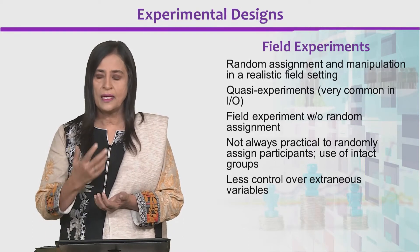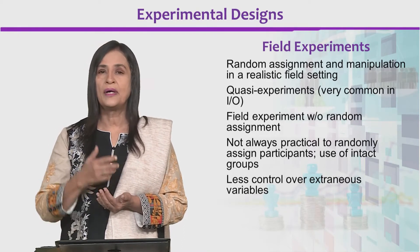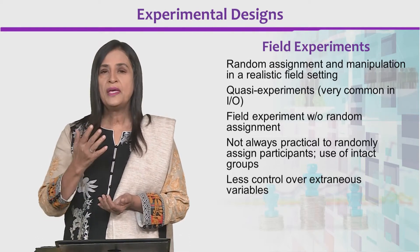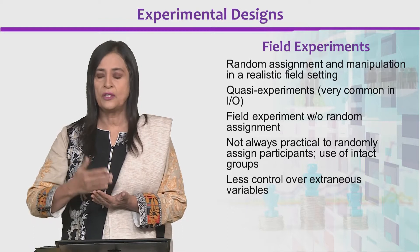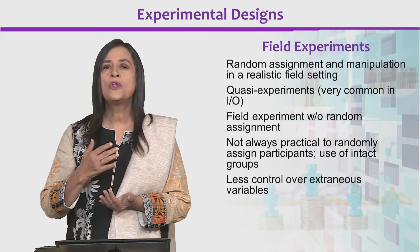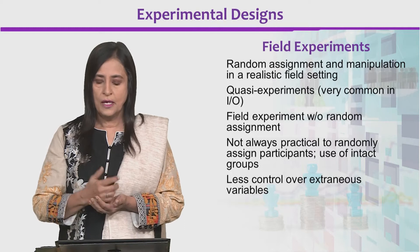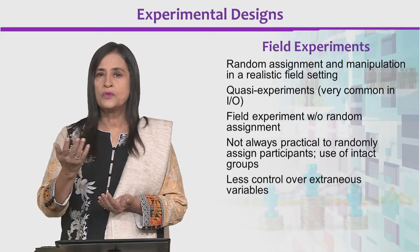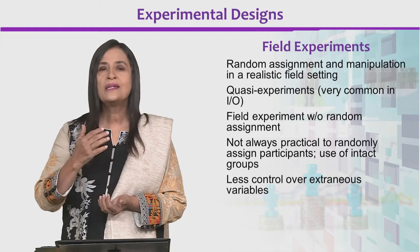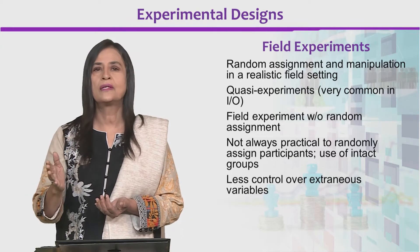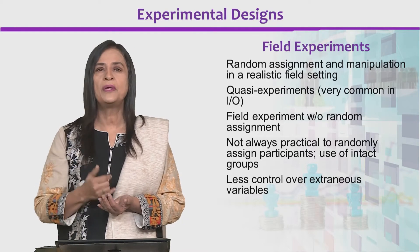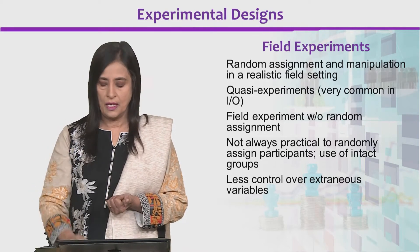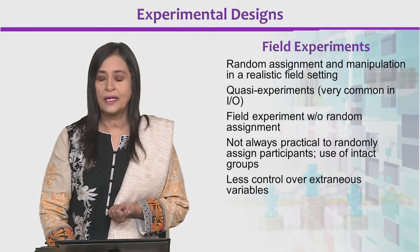Field experiments have random assignment and manipulation in a realistic field setting. Quasi experiments are very common in industrial and organizational psychology. Field experiments can be done with or without random assignment and it is not always practical to assign participants, so we use intact groups. There is less control over extraneous variables like environment, other people, temperature, noise, and distraction, which is not the case in the lab.